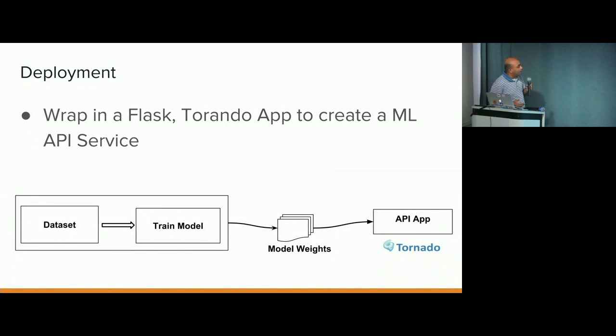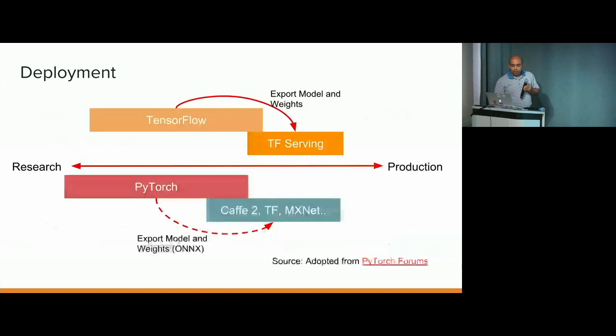So, I have my dataset. I train my model. I save my model weights. And then I have a thin Tornado app that I will deploy this as an API service. Okay. This is how I mostly use PyTorch or before PyTorch. This is how I do scikit-learn as well. Scikit-learn exactly the same process. So, but here is how you could do as well.